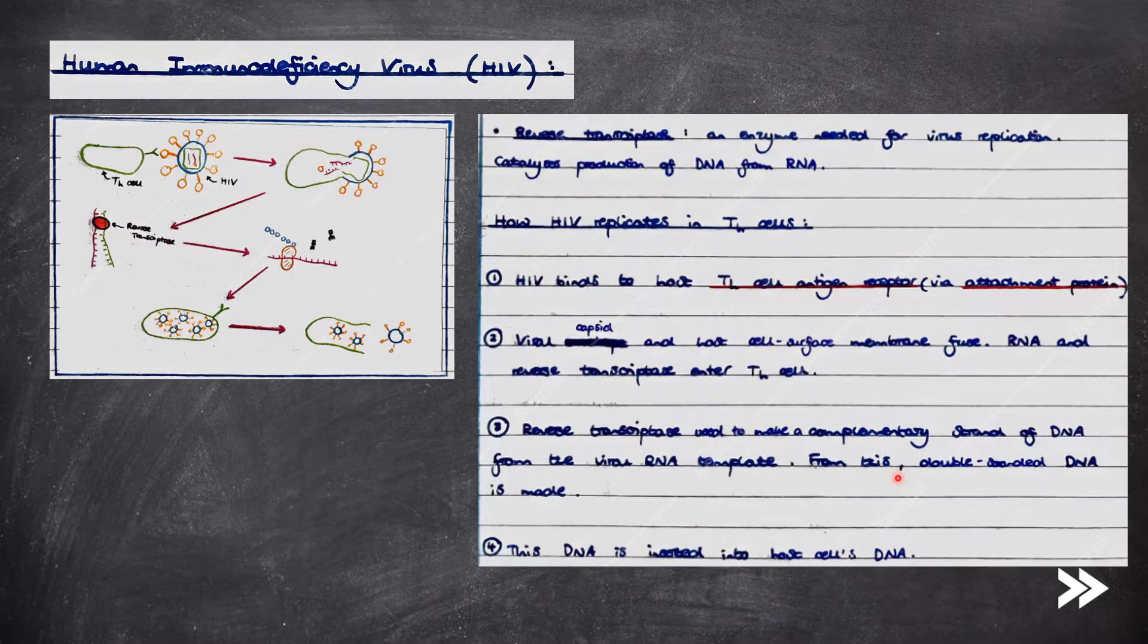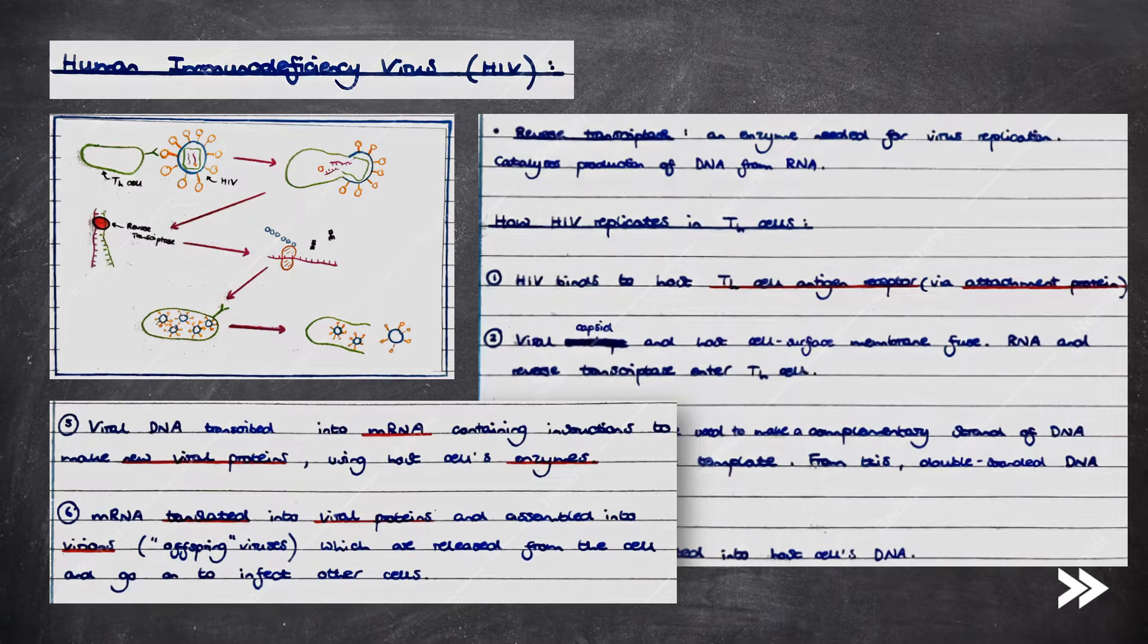From this, double-stranded DNA is made. This DNA is inserted into the host cell's DNA. Next, the viral DNA is transcribed into mRNA containing instructions to make new viral proteins using the host cell's enzymes. The mRNA is then translated into the viral proteins and assembled into virions, which are offspring viruses, which are then released from the cell and go on to infect other cells.